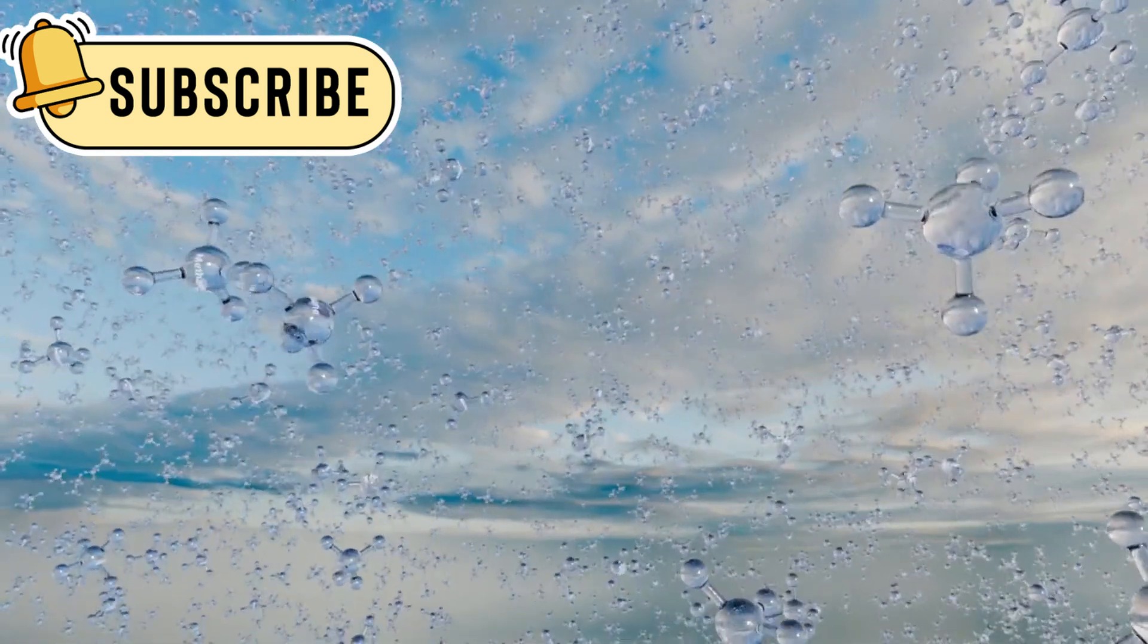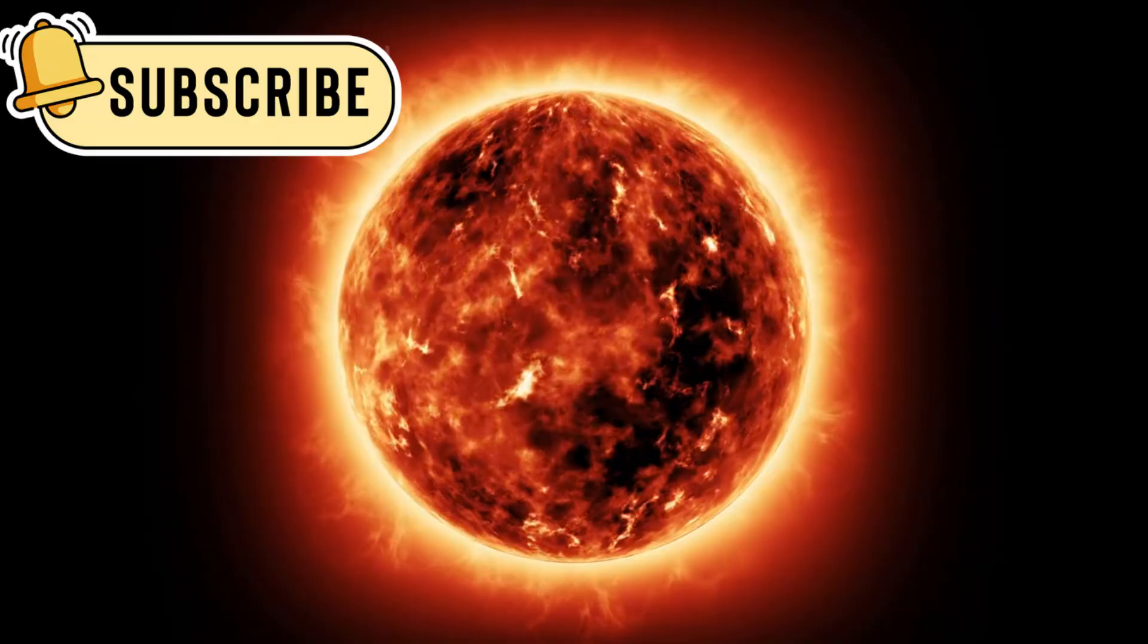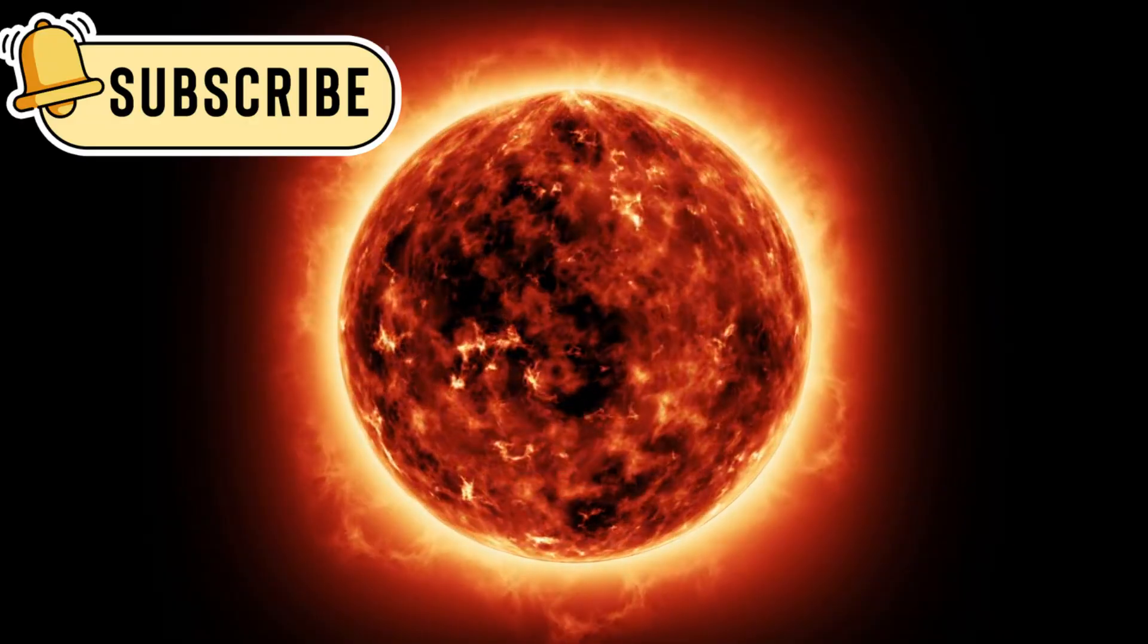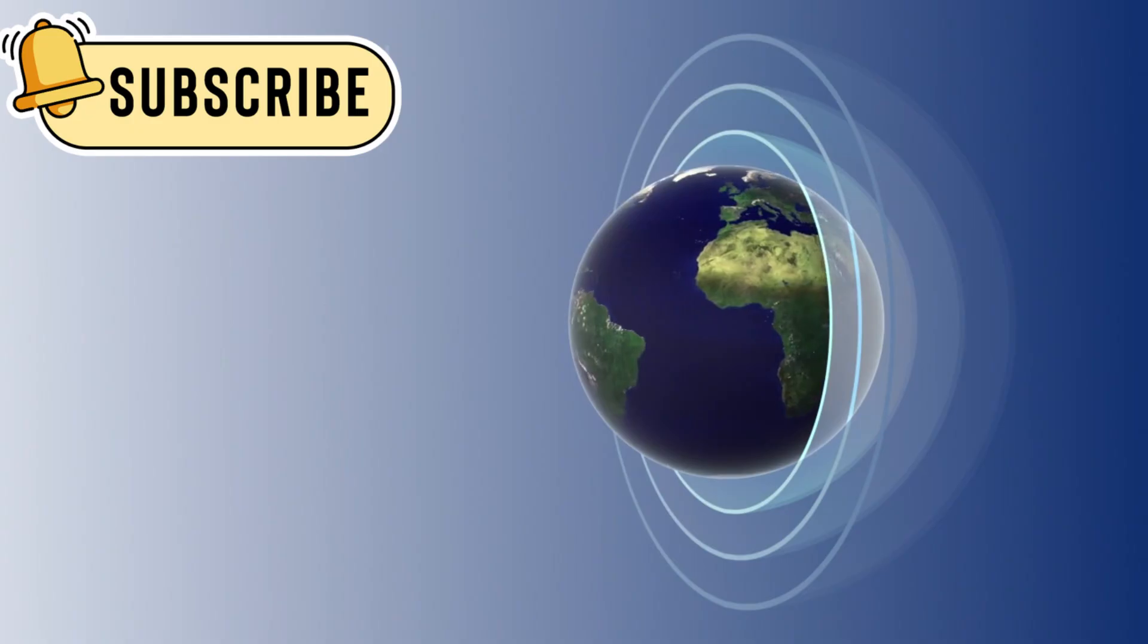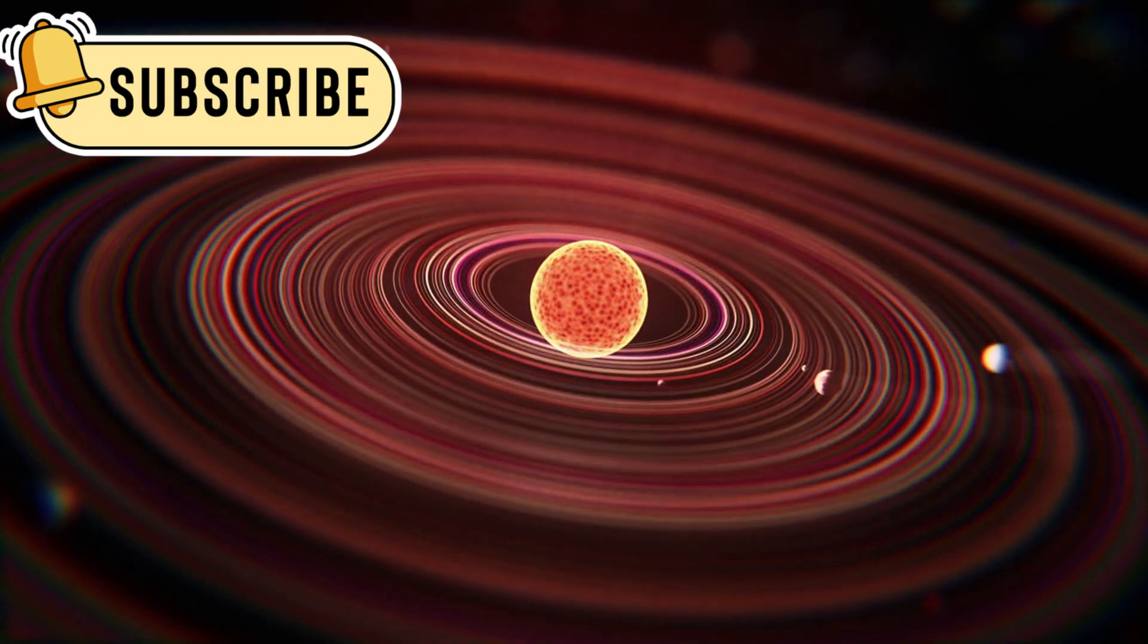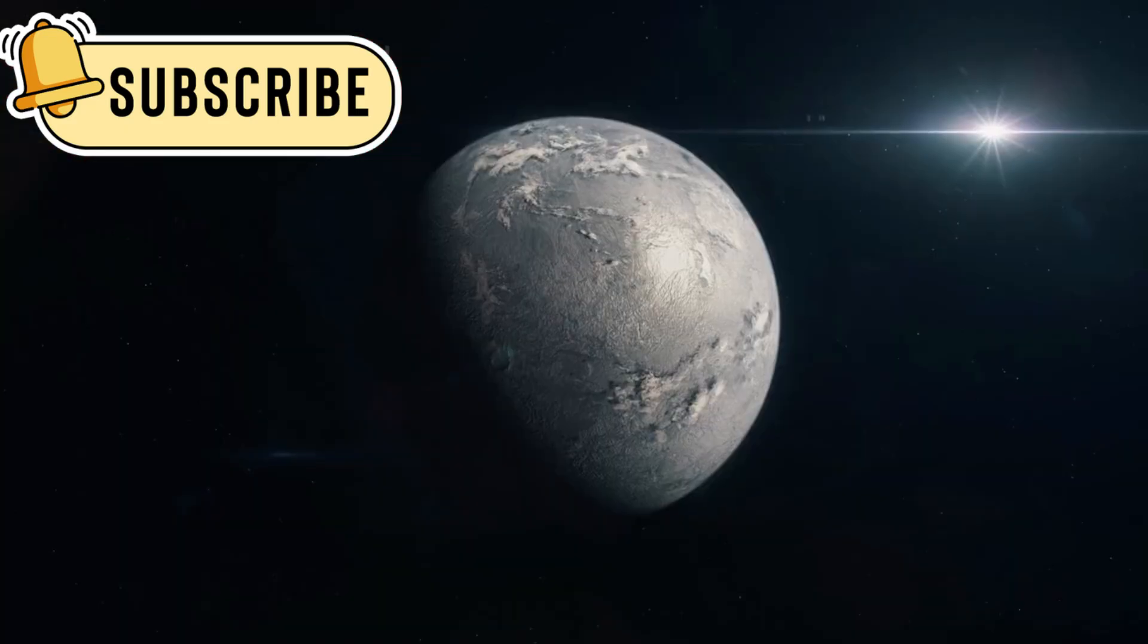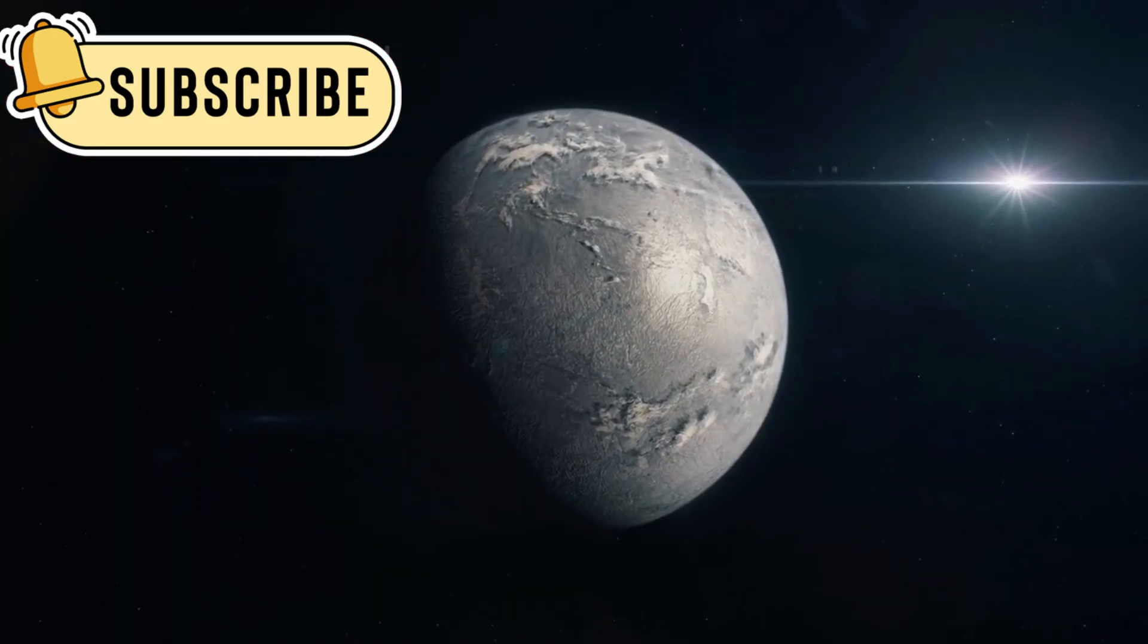It contains nitrogen, methane, and carbon dioxide in small amounts. As Pluto orbits the sun, its atmosphere changes. Sometimes it thickens, and other times it freezes back onto the surface. This strange cycle isn't seen anywhere else in the solar system. It gives scientists a new way to understand how atmospheres work on icy worlds.